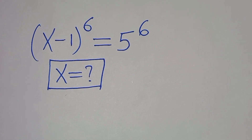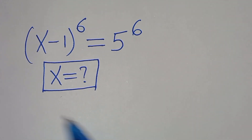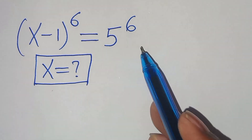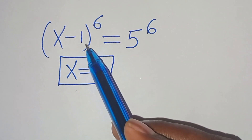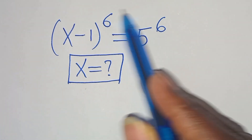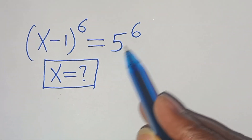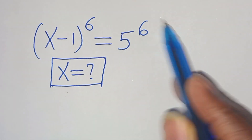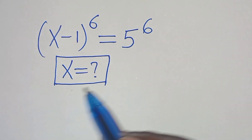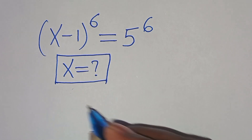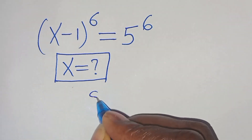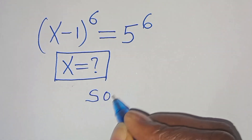Hello everyone, you're welcome to solve this nice exponential equation which is (x minus 1) to the power of 6 equals 5 to the power of 6. What is the value of x? Now let's provide a solution.